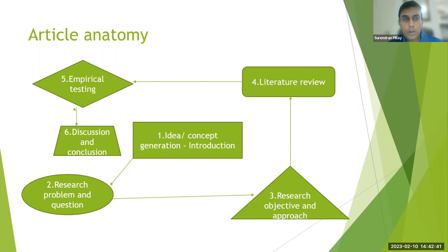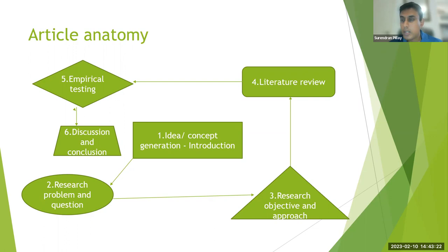What I picked out from this anatomy is that we can clearly see there are certain sections to every article. If you're systematic, you can say the concept or idea is mine, the introduction is mine, the research problem and objectives are mine, but the literature review — maybe I'll get someone else to work on that after giving clear instructions. The empirical testing and conclusion can also be distributed, making collaboration so much easier to create your research masterpiece.